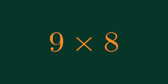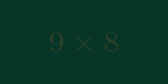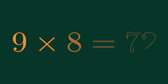What is 9 times 8? 9 times 8 is equal to 72.